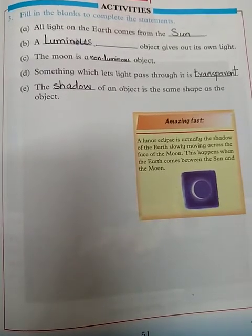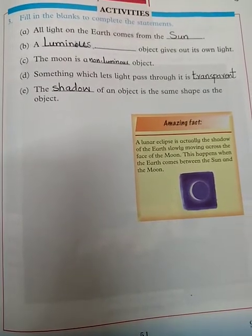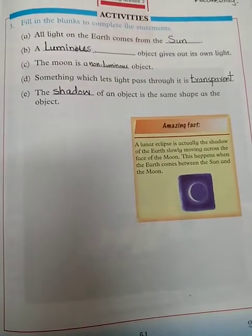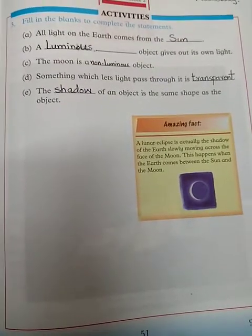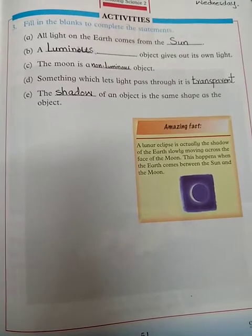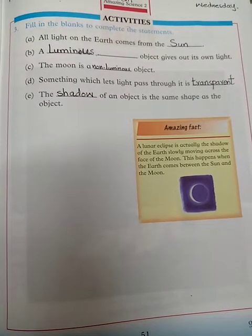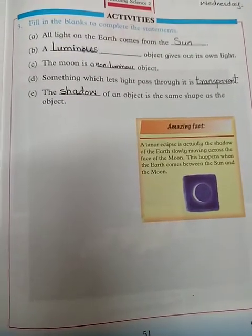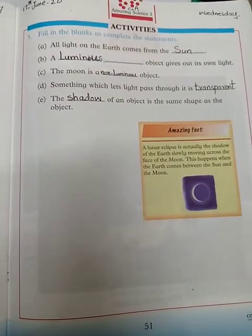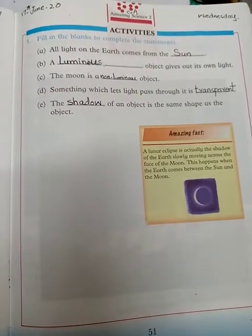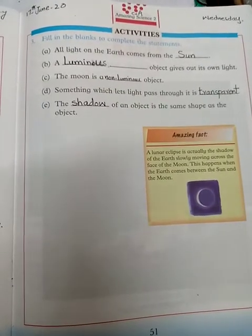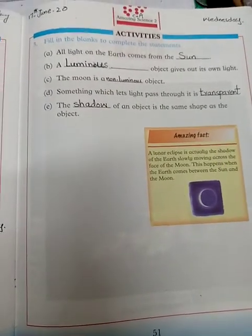So write 'shadow' in the last blank. To summarize: first blank — Sun, second — luminous, third — non-luminous, fourth — transparent, fifth — shadow. Complete all the work and take good care of yourselves. Allah Hafiz.